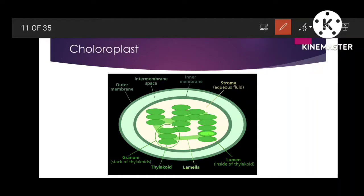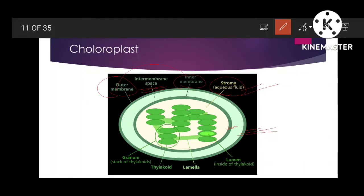Now we'll talk about the detailed structure of the chloroplast. The chloroplast is a double-membranous structure with an outer membrane and an inner membrane. The space between these membranes is the intermembranous space. Inside the chloroplast we have an aqueous gelatinous fluid called the stroma, which contains enzymes required for the dark reaction of photosynthesis, ribosomes, and its own circular DNA.